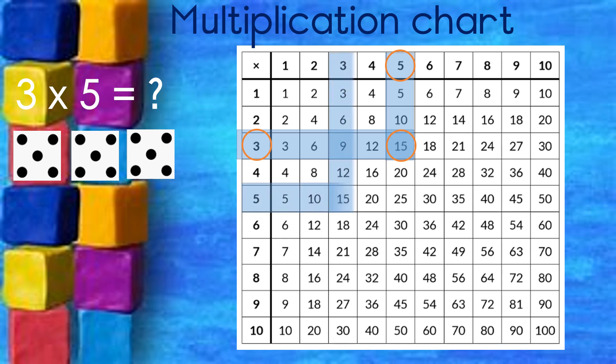If I go down with the 3 and across with the 5, they will still meet on 15. So whether I say 3 times 5 or 5 times 3, it doesn't matter. I will get to the same answer of 15.